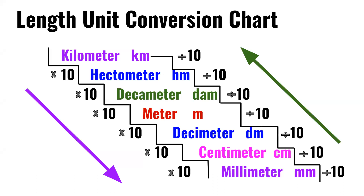Length unit conversion chart. First, we have the kilometer, which is km. Times 10 is the hectometer, which is hm. Hectometer times 10 is the decameter, which is dam. Decameter times 10 is the meter, which is m.